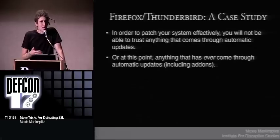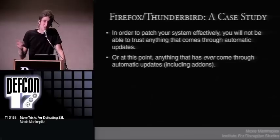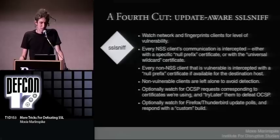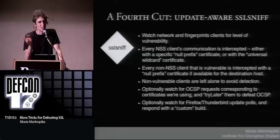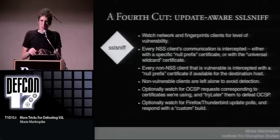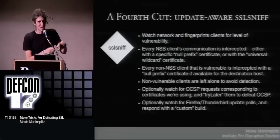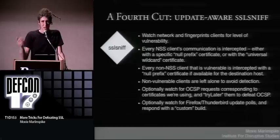The problem is that in order to patch your system for this effectively, you're not going to be able to trust anything that comes through automatic updates — or at this point, anything that has ever come through automatic updates. The fourth cut is an update-aware SSL Sniff: it does everything before — fingerprinting, OCSP denial — and now also watches for update requests. If it sees one, you can specify on the command line to update these platforms with this binary, or hijack whatever add-on update. In our malware competition, the winning entry had an add-on that any time you posted data to a form, it also posted a copy to the attacker — the man-in-the-middle attack that keeps on giving.